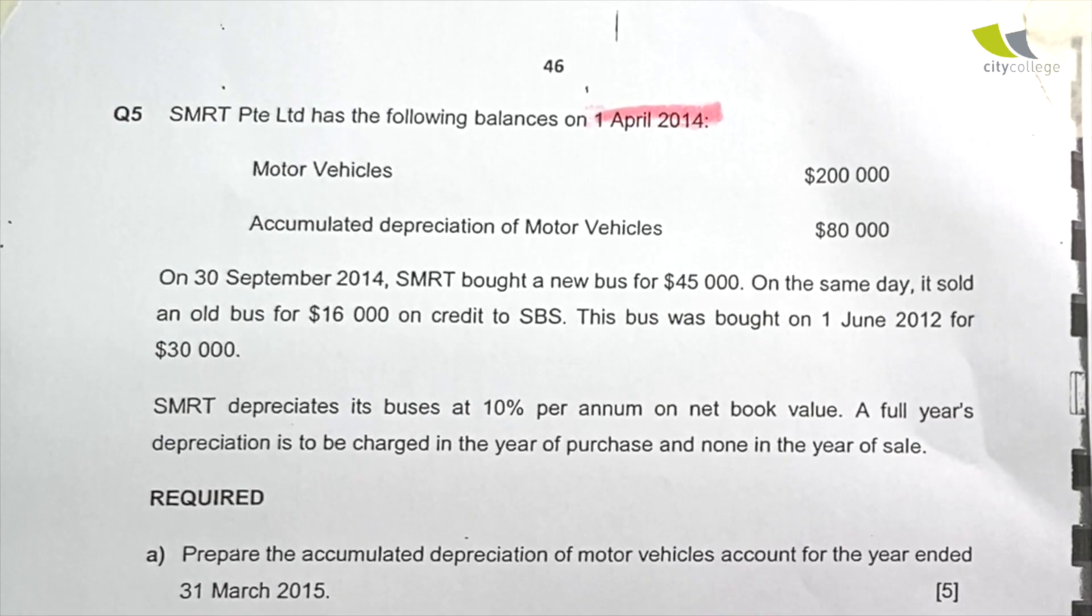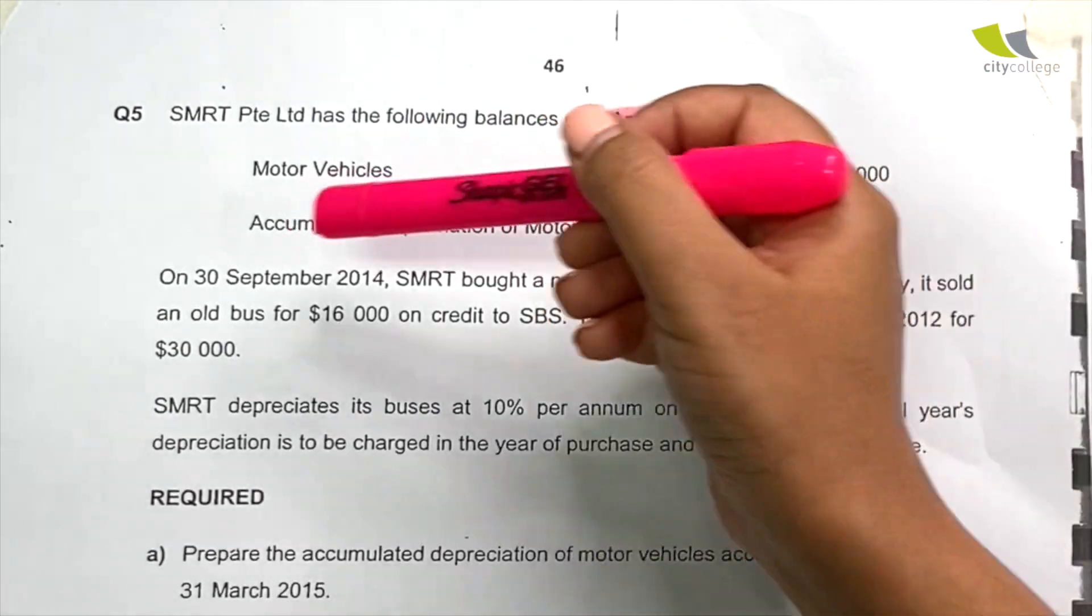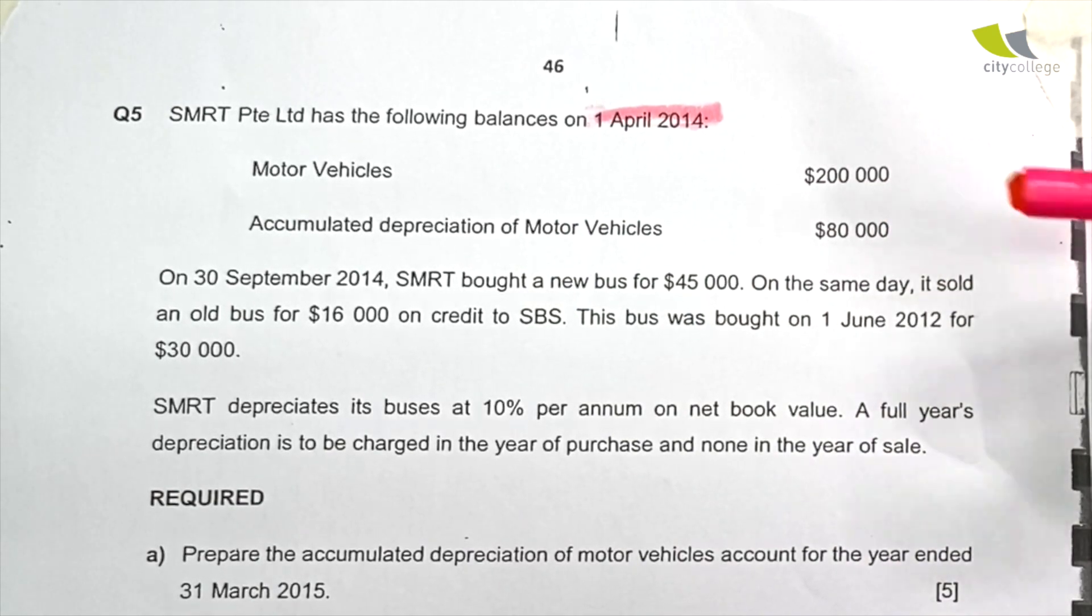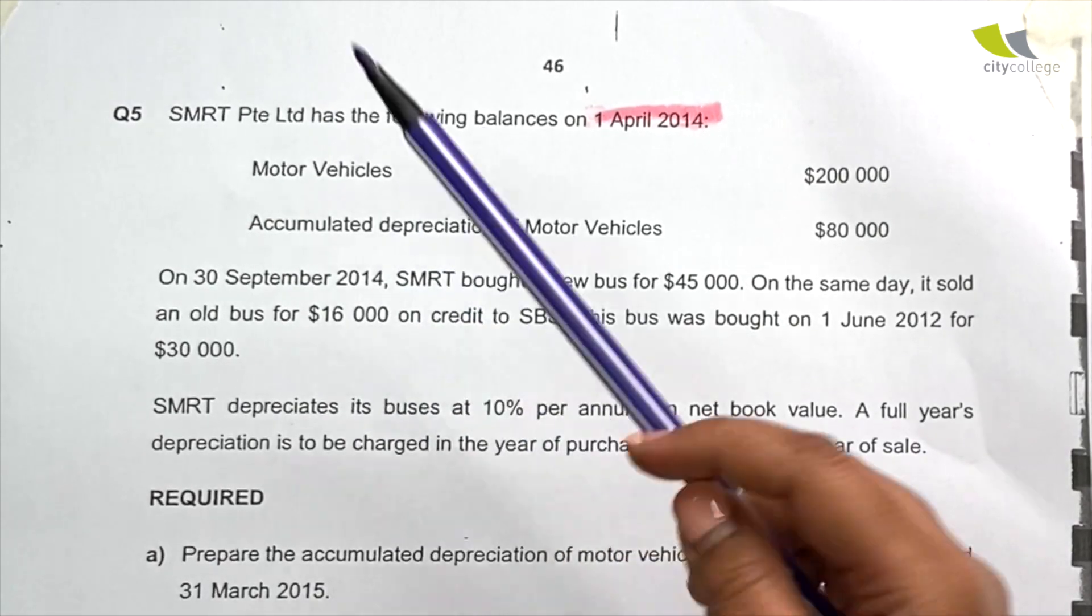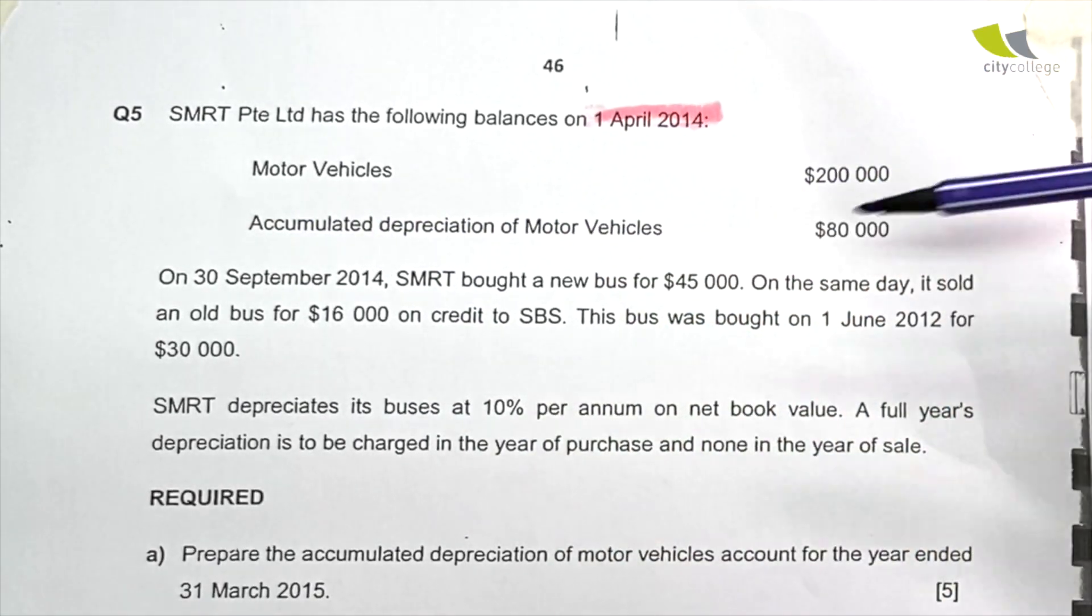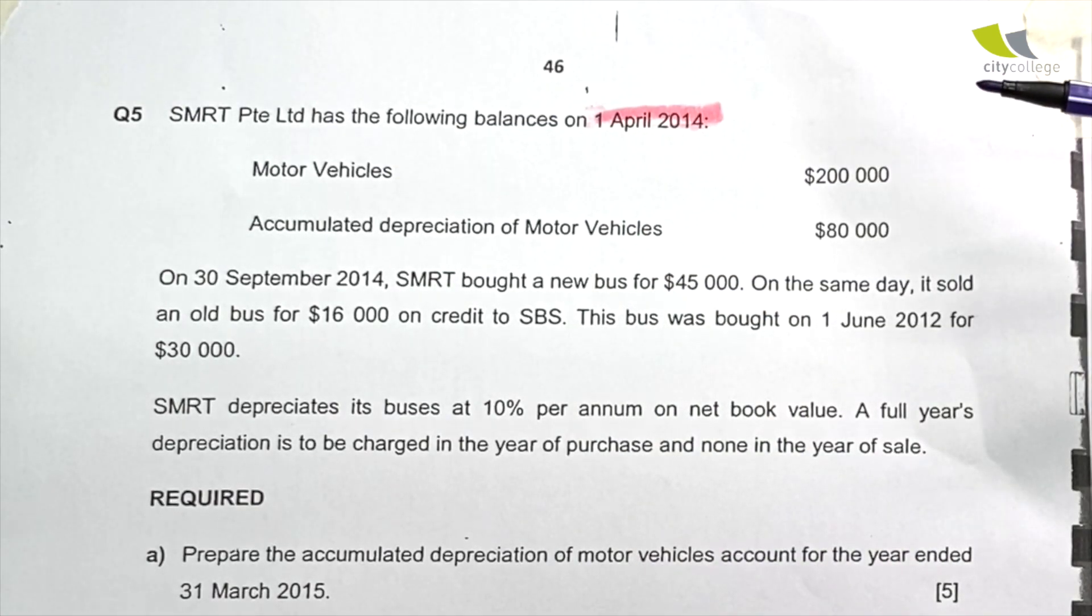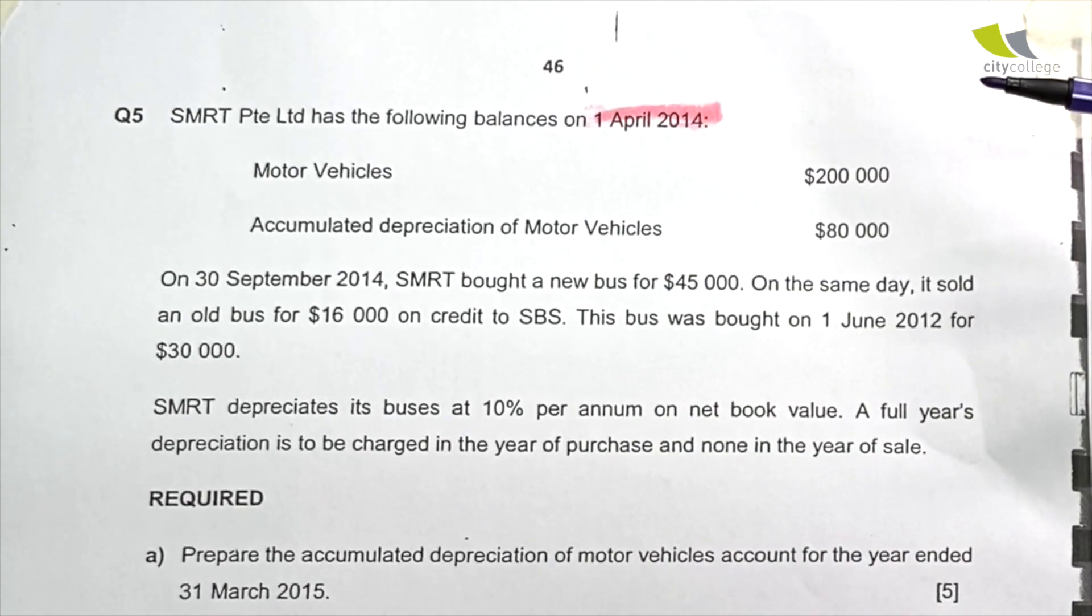As at 1st April 2014, we have motor vehicles balance of $200,000 and accumulated depreciation of $80,000. Remember, motor vehicles refer to the non-current asset itself, while accumulated depreciation tells us that this motor vehicle in the business has been losing value over time.